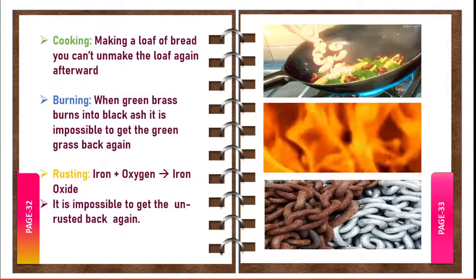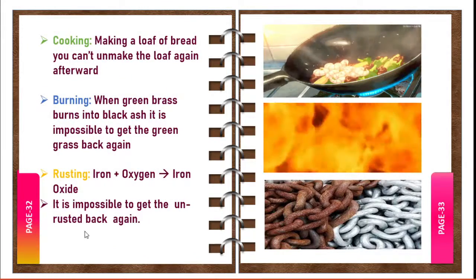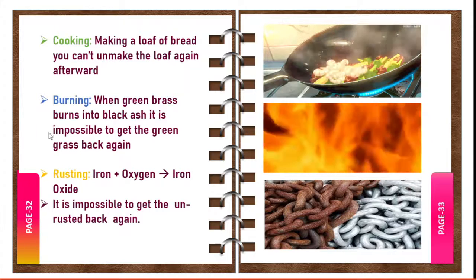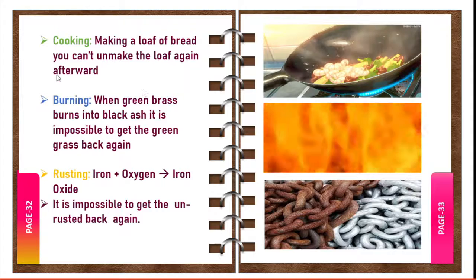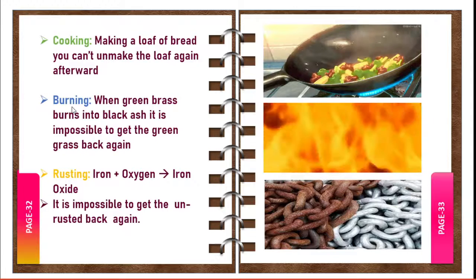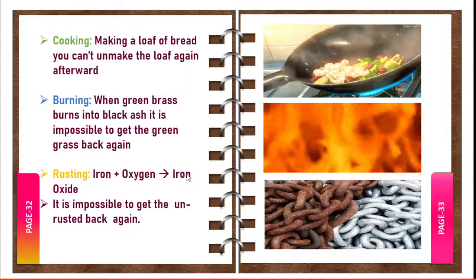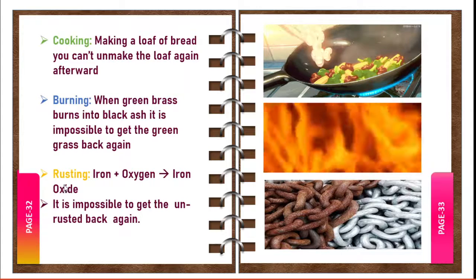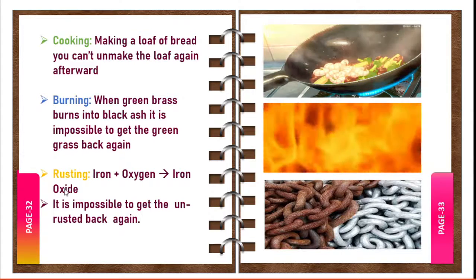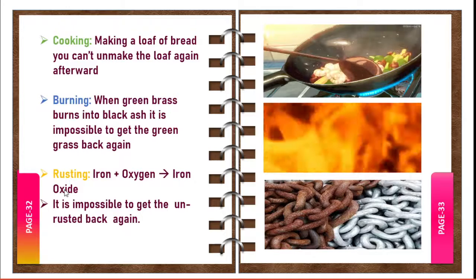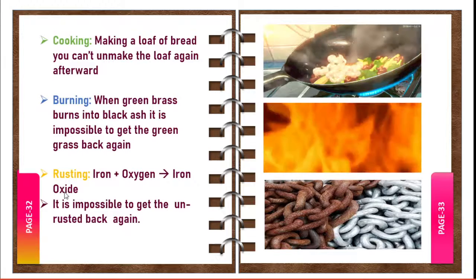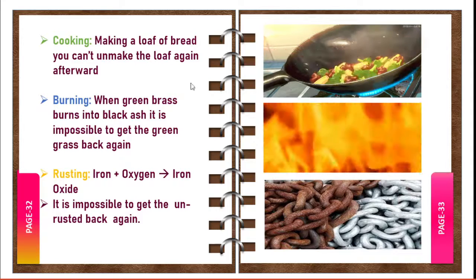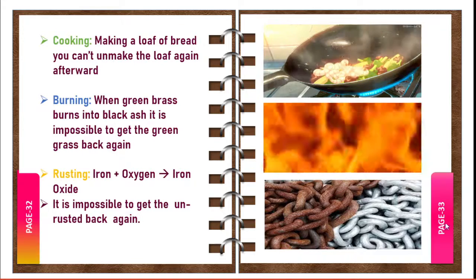The cooking process, burning process, and rusting — these three processes are irreversible. Cooked food cannot turn back to its initial substance. In burning, the substance does not return to its initial state — it gives only ash and smoke. In rusting, iron reacts with oxygen in the atmosphere to give iron oxide; it does not go back to the initial state. These are examples of irreversible changes.